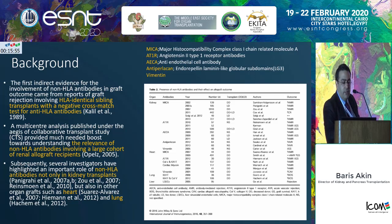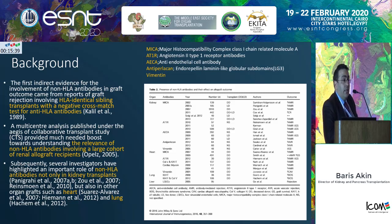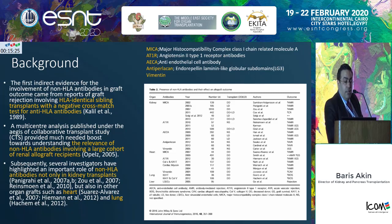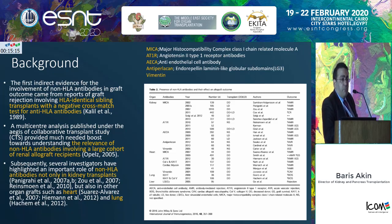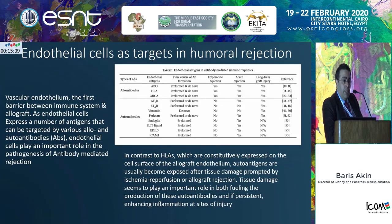Non-HLA antibodies are important not only in kidney but also in heart, lung, and liver transplantation. From these we know MICA — the major histocompatibility complex class 1 chain related molecule A — and perhaps most importantly, the angiotensin 2 type 1 receptor antibodies. Also anti-perlican, and the laminin-like globular subdomain 3 (LG3) is another important antibody currently being evaluated. These are the non-HLA antibodies especially concerning in kidney transplantation, though there are several more.